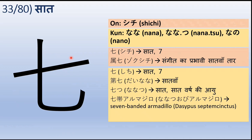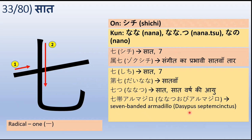Shichi yaani saat. Tai-nana — tai-nana ka arth hai saatwa ya seventh. Uske baad hai nanatsu yaani saat varsh ki aayu. Aur uske baad hai nanatsu obya armadillo — iska arth hai seven-banded armadillo, aur iska scientific name hai Dasypus septemcinctus. Ye ek ke radical se aaya hai, aur ye iska stroke order hai — do stroke mein yeh likha jaayega. Is chinha ka saat ke liye kaise chunav hua, iske baare mein hum spasht roop se nahi keh sakte.